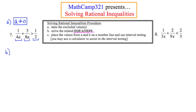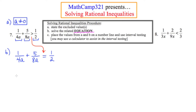Part B says to solve the related equation. I'm going to take the rational inequality and rewrite it with an equal sign. To solve this rational equation, I'll establish the LCD and rewrite each of the three fractions with that LCD. In this case, the LCD is going to be 8A, so I'll set up the three fractions with that LCD of 8A.